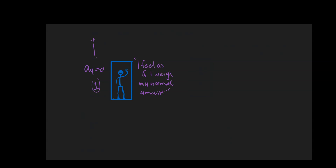In our first scenario, I feel as if I weigh my normal amount. This is either at the beginning of the trip before the elevator is moving, or in the middle of the trip when the acceleration of the entire system — the elevator and you — is zero. We're going to use the sum of the forces strategy. We can draw a free body diagram on the person. We've got two forces: the force due to gravity pulling down, and the normal force pushing up. It turns out the normal force is what gives us our sense of weight — it effectively causes what we call apparent weight.